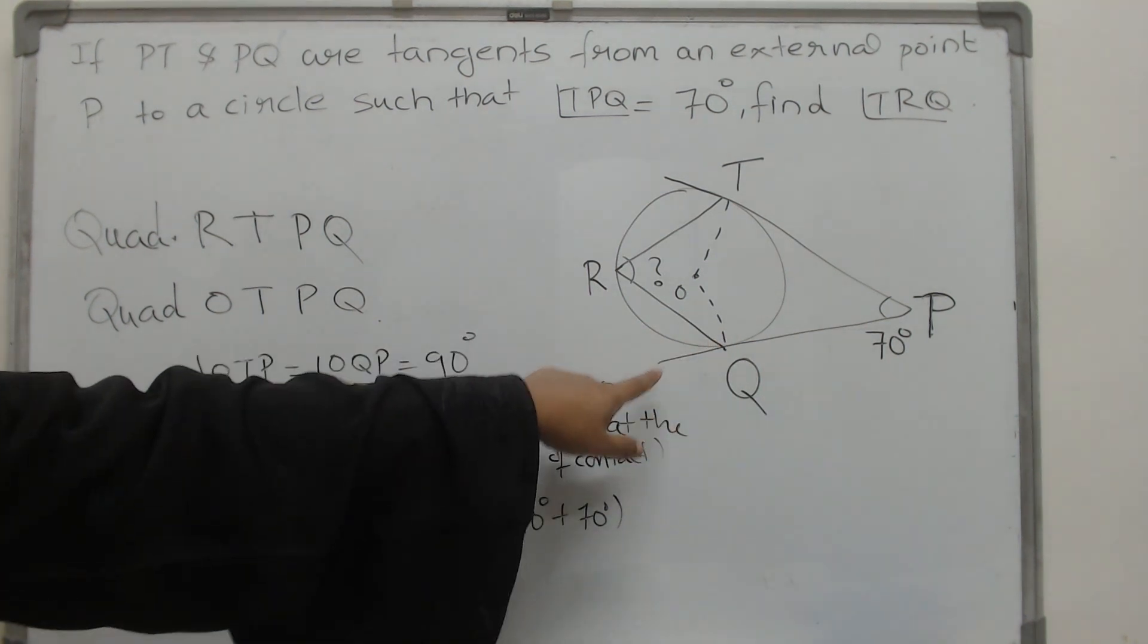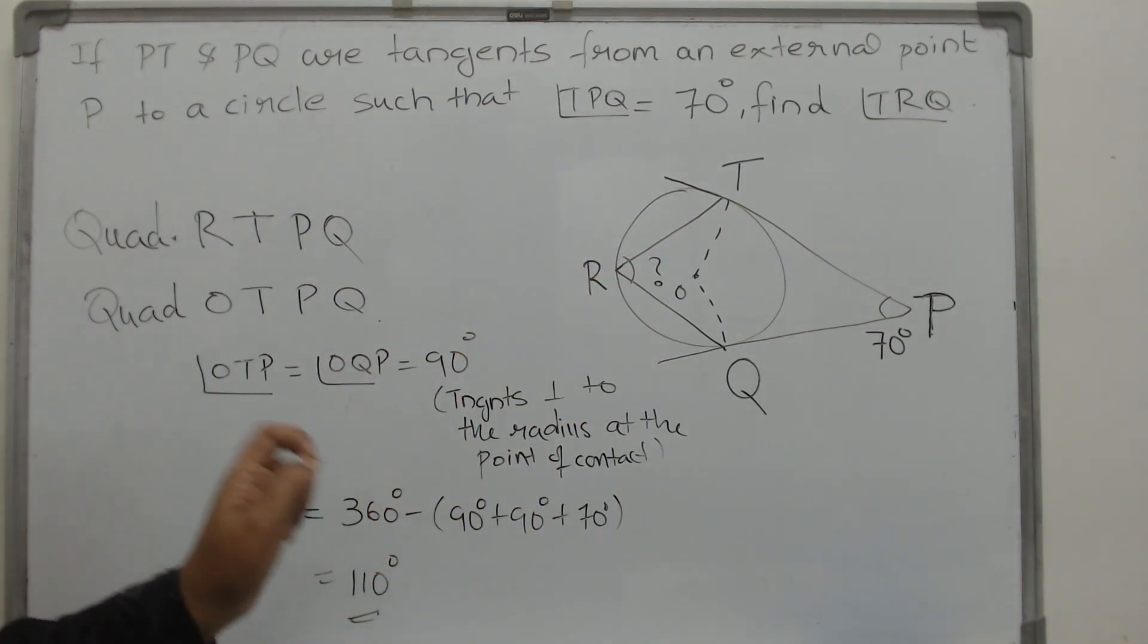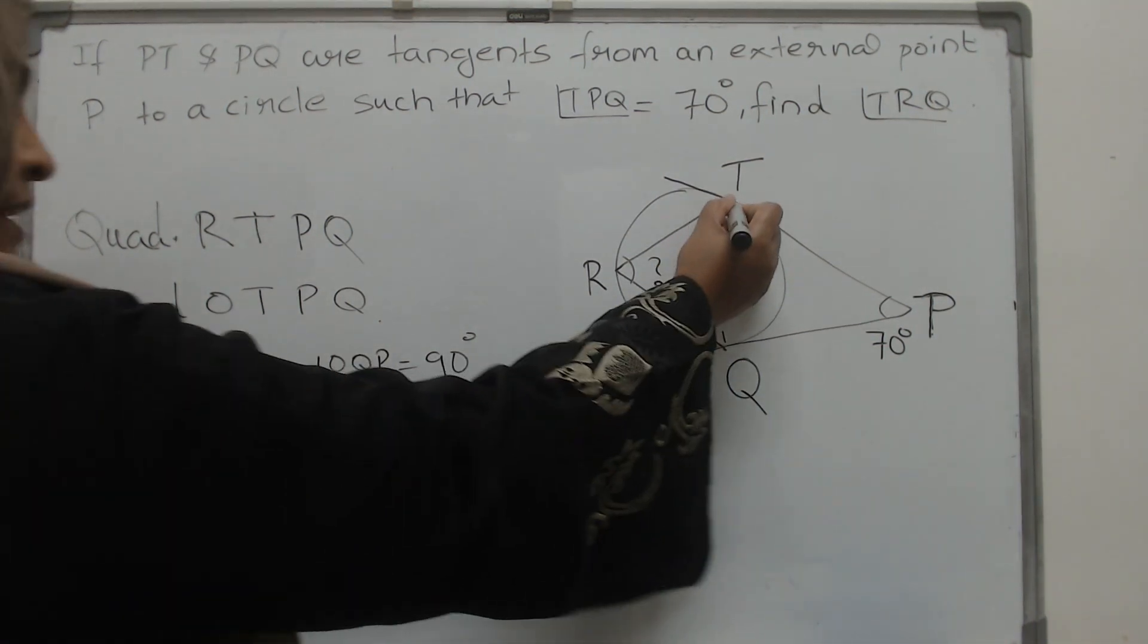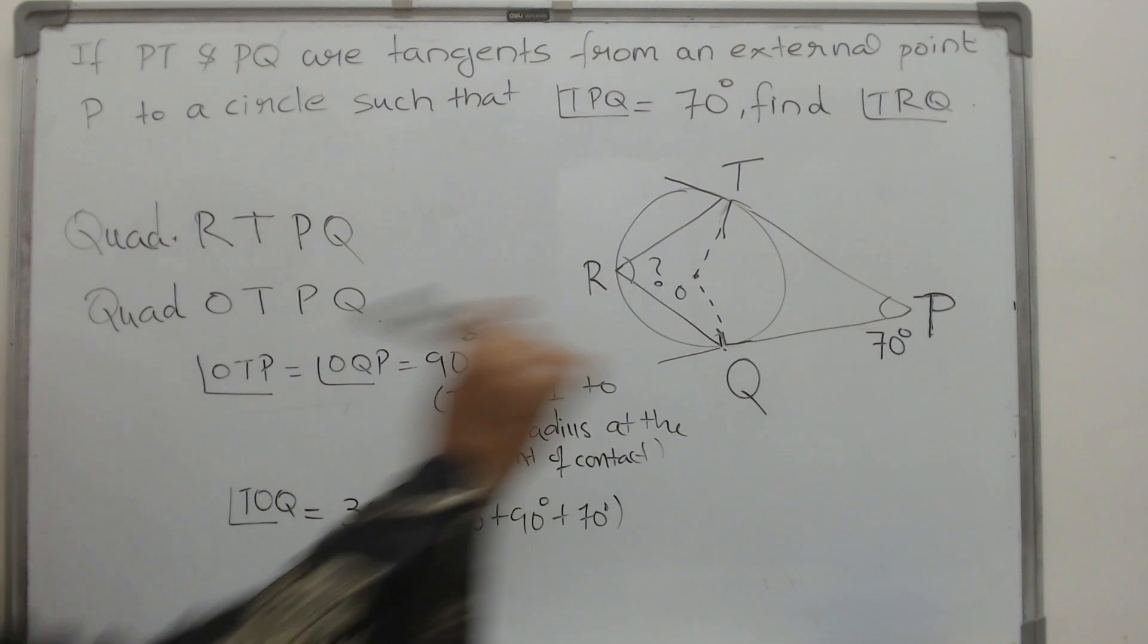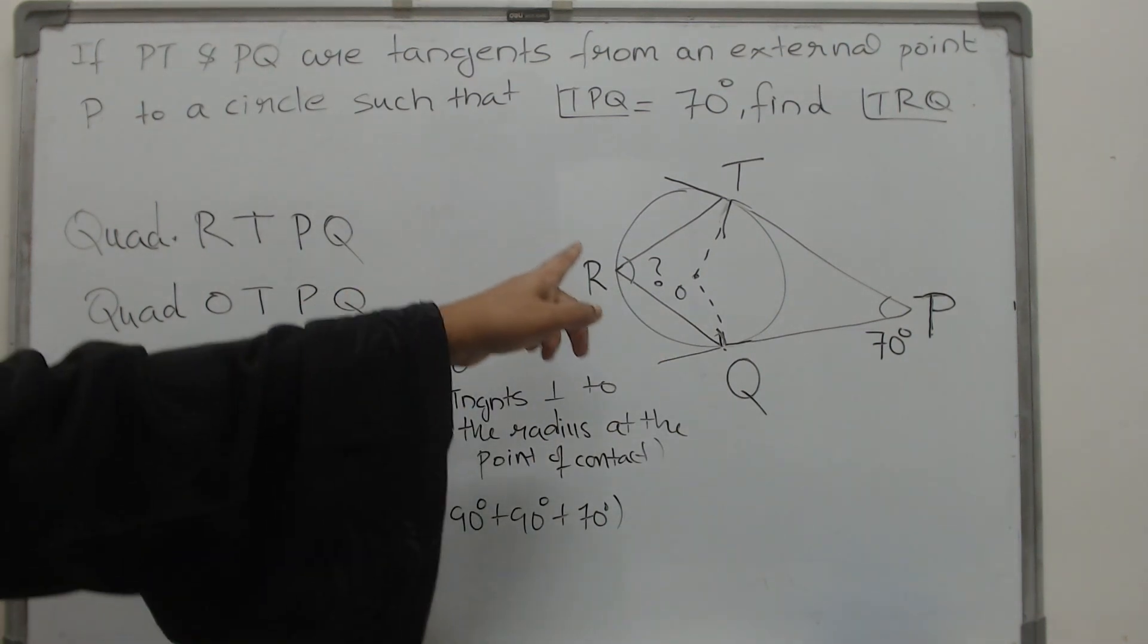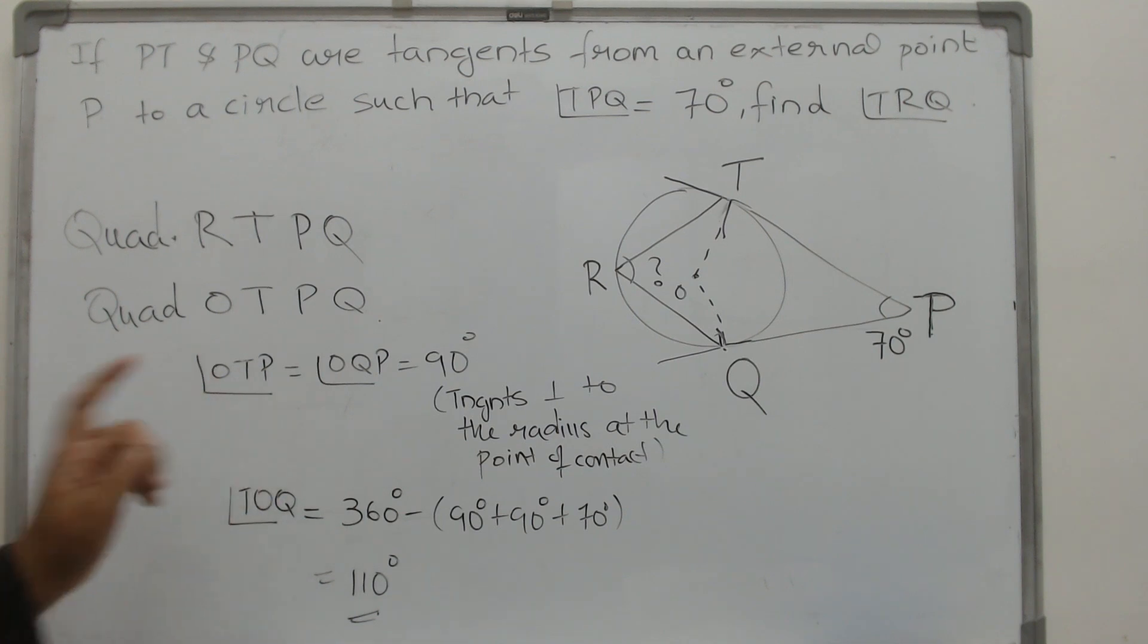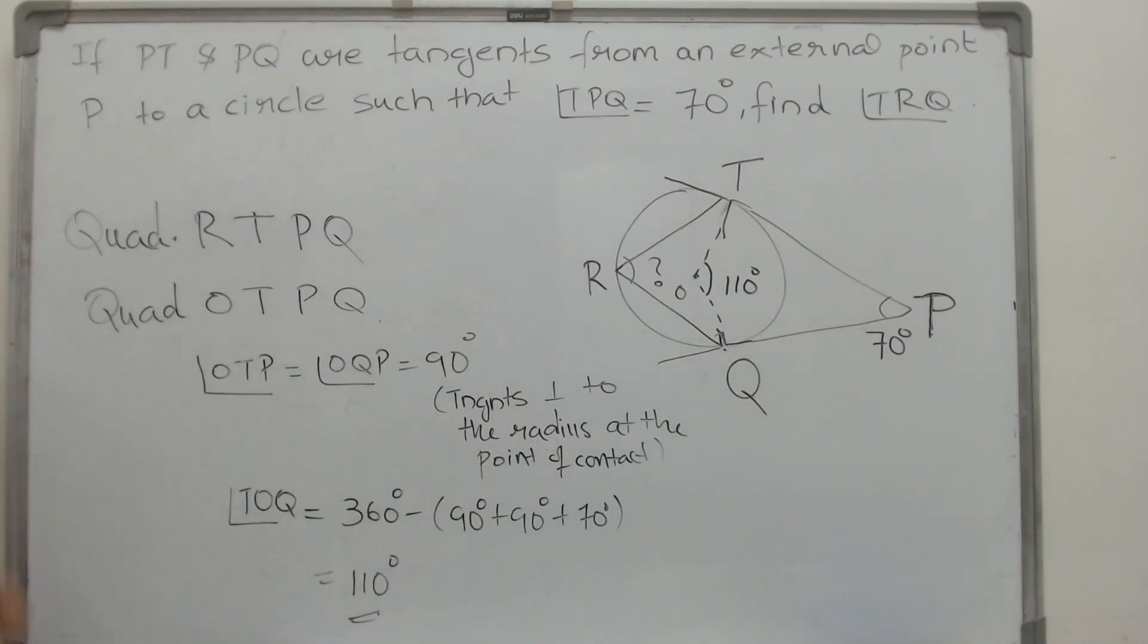Because you have a tangent. At the point of contact, the tangent is perpendicular to the radius. So this is 90 degrees and this is 90 degrees and 70 degrees there. Now the sum of the angles of a quadrilateral is 360 degrees. Then you get what? This angle is 110 degrees.